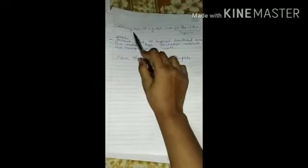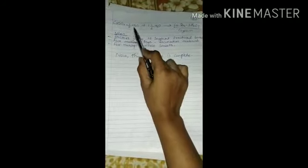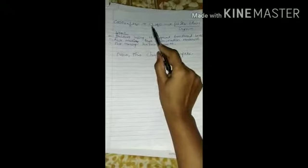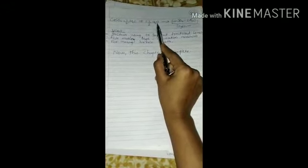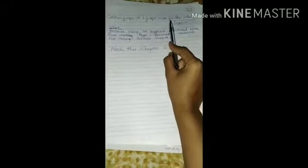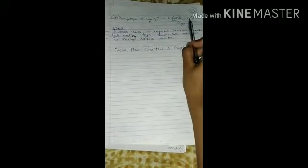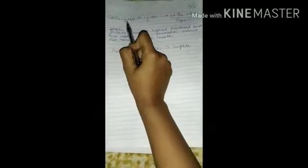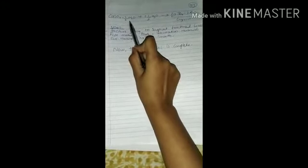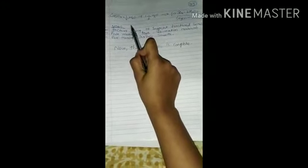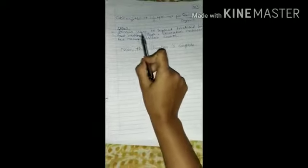Plaster of paris plus 1.5 H2O, we get gypsum. If two moles of water molecules, it is gypsum. With half molecule of water, that is POP. Uses: doctors use it to support fractured bones.